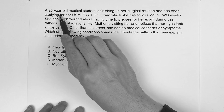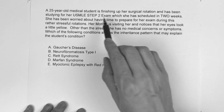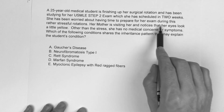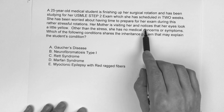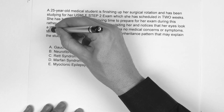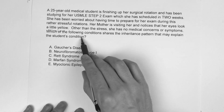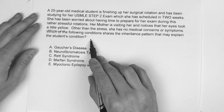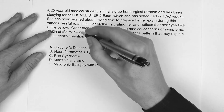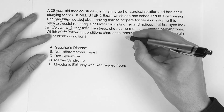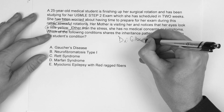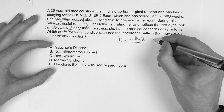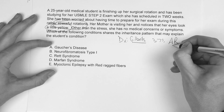The last question: a 25-year-old medical student finishing her surgical rotation has been studying for the USMLE Step 2 exam scheduled in two weeks and has been stressed. Her mother notices her eyes look a little yellow; other than stress she has no medical concerns. Which condition shares the inheritance pattern that may explain the student's condition? This is a two-stepper — she has yellow eyes under stress, so she has Gilbert's syndrome. Gilbert's has an autosomal recessive inheritance pattern.